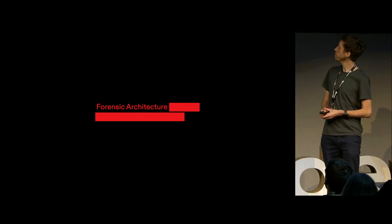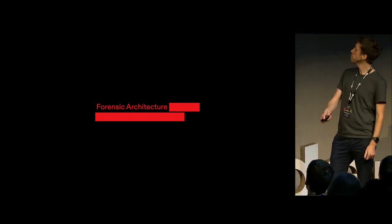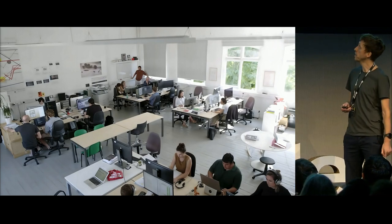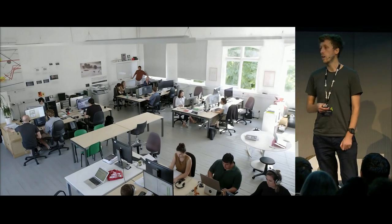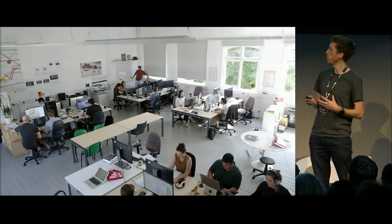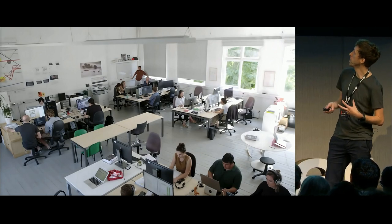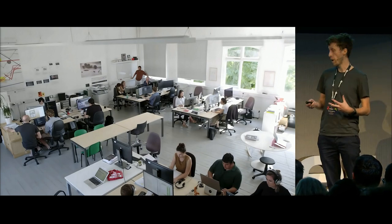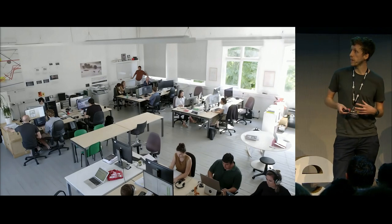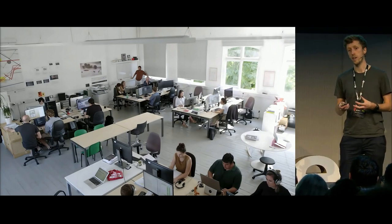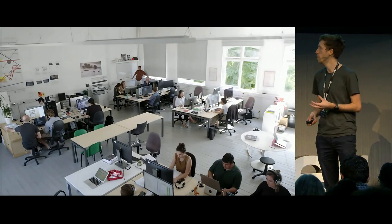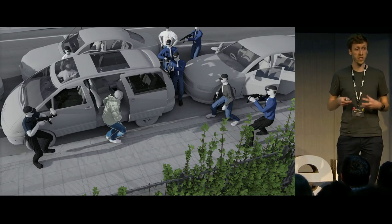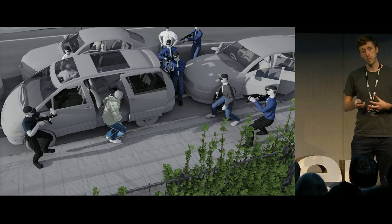So, Forensic Architecture. We are a research agency based in Goldsmiths University in London, and we are a multidisciplinary group. We're comprised of architects, investigative journalists, developers, lawyers, filmmakers — a very varied bunch. We carry out investigations into human rights violations and we advocate for people who have been affected by them. We construct 3D reconstructions of crime scenes, and we deal with state violence and, in this particular case, police violence.